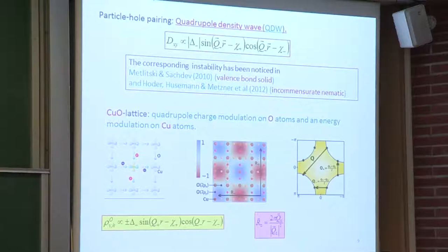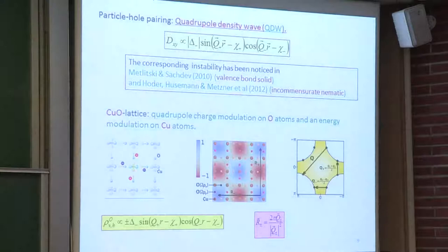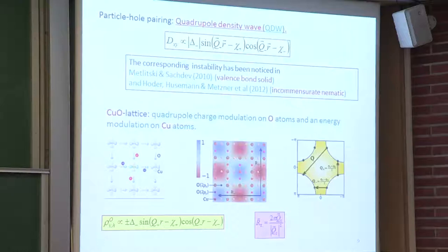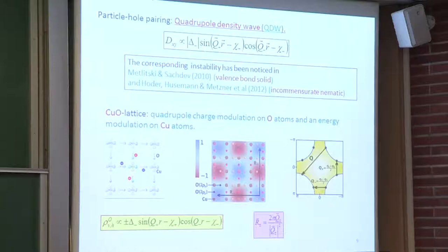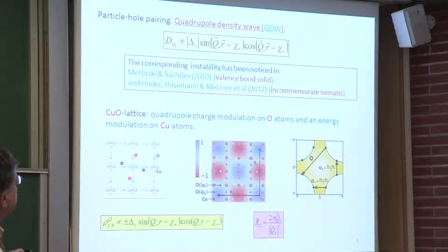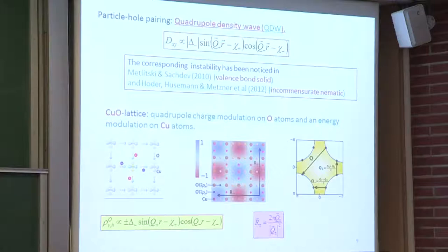Before we study fluctuations, some words about what this particle-hole state is—it is not a usual state. Those who first spoke about this type of order found that SU(2) symmetry should lead to some instability in the spin-fermion model, although they were not brave enough to claim it could be a real state rather than just an instability or critical fluctuations at the transition point. If one makes this order parameter, it is not really a charge density wave.